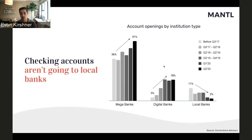All of that growth is coming at the detriment of community banks. When we ask why, the common denominator is not branch expansion — money center banks aren't opening new branches left and right, and digital banks have no branches at all. It's not interest rates either. The common denominator is technology and digital channels. So what we'll talk about today is how can we take back some of that market share and compete with money center banks and digital banks?